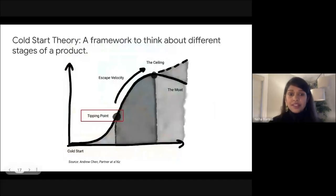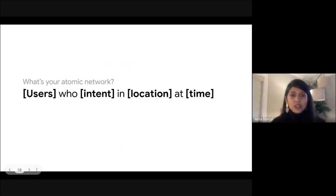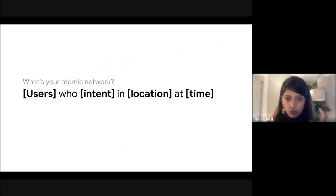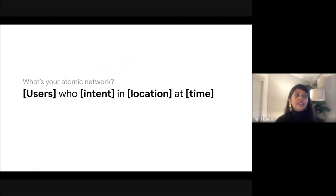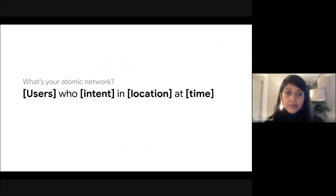If there is one thing I want you to take away from today, it is this: when you get back to work on your startup project, write down the definition of your atomic network. Who is your user group? What is the intent, location, and time? For example, if you are a project management application, your atomic network could be a product team at Chase Bank who wants to plan for the Q2 cycle. Be as specific as you can.